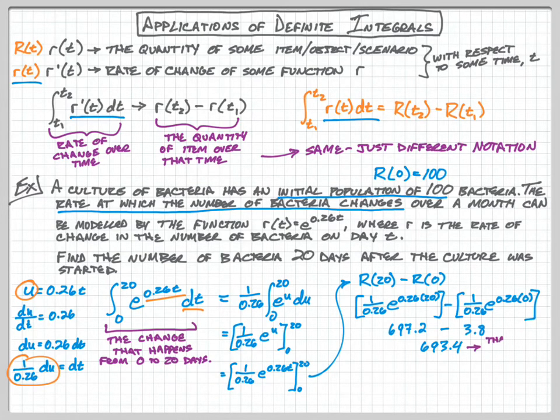Now keep in mind that this is the amount of change from time 0 to time 20. It's not saying that at time 0 we had 3.8, because we already know at time 0 we have 100 bacteria. That means as we move from 0 to 1 we have 3.8 bacteria. So over the course of the 20 days from 0 to 20, we have 693.4 bacteria.